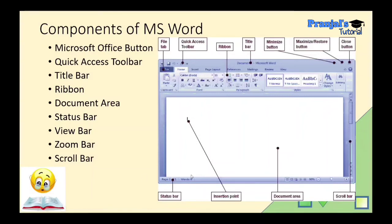The horizontal scroll bar is used to move left to right and right to left. The vertical scroll bar is used to move top to bottom and bottom to top. So there are two types of scroll bar in MS Word: vertical scroll bar and horizontal scroll bar.